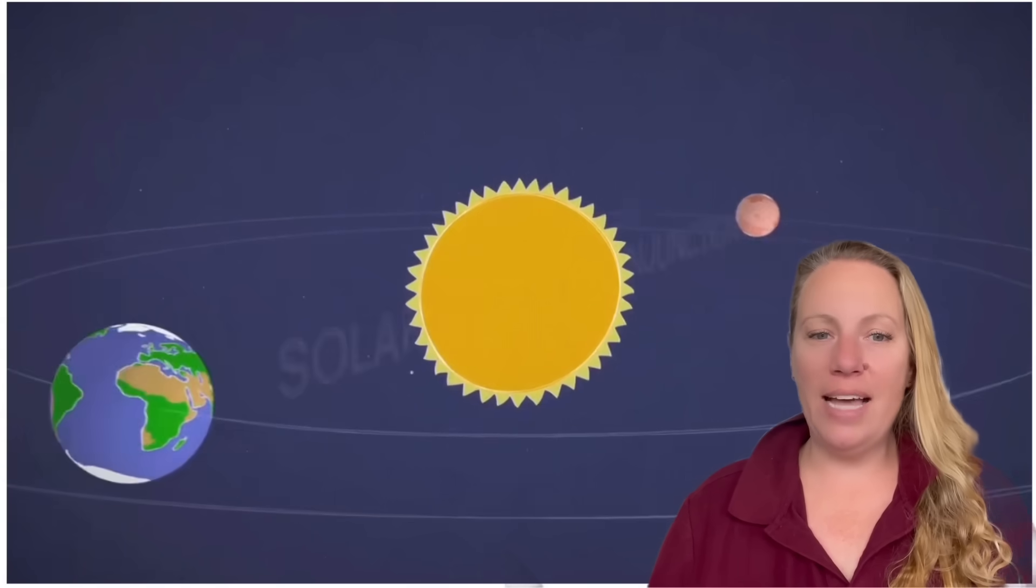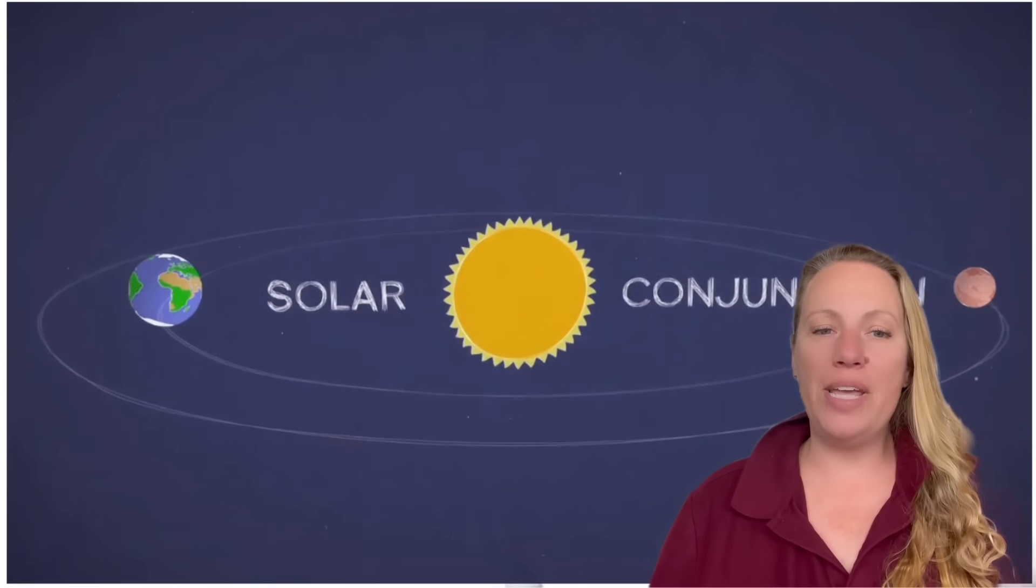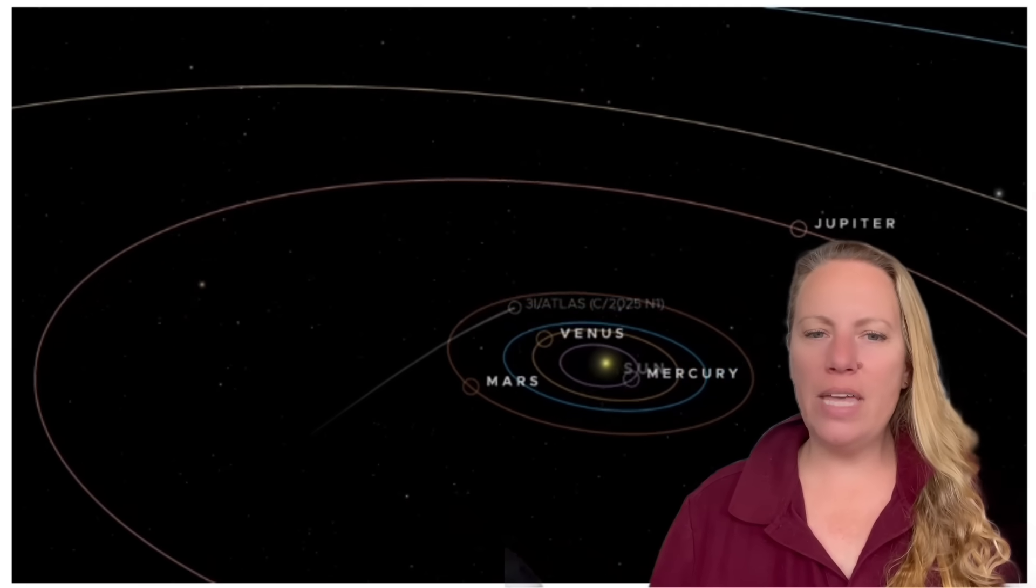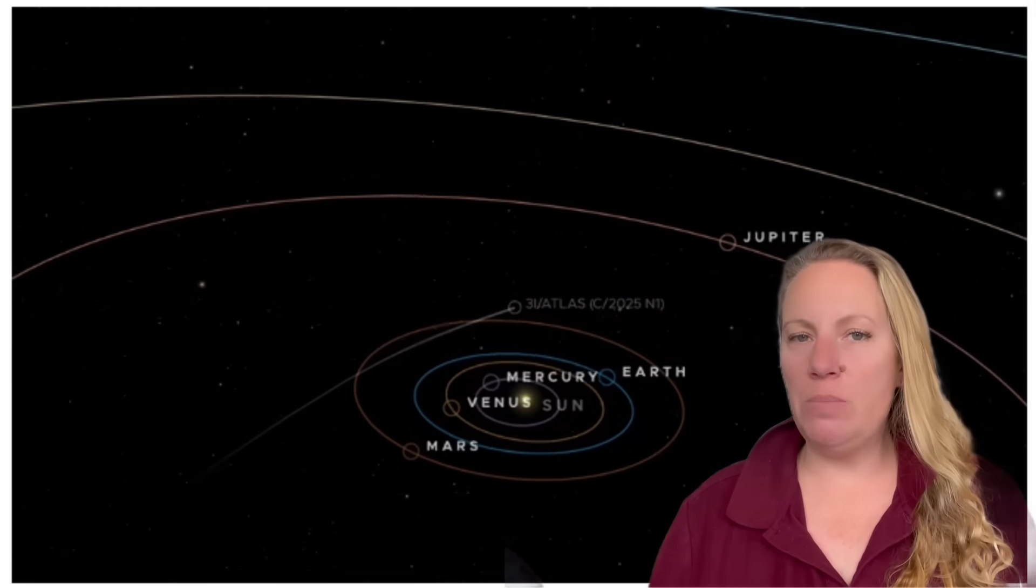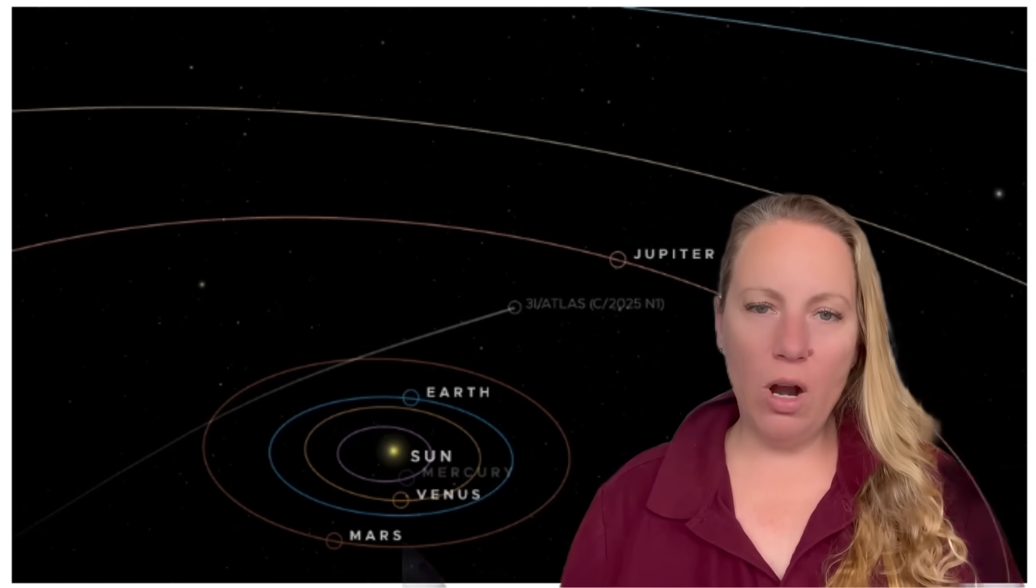What is 3i Atlas? Why is it so important? What weird behavior is it showing? And why is some imagery being withheld? And what might this mean for us? Let's start with the basics so that we're on the same page.